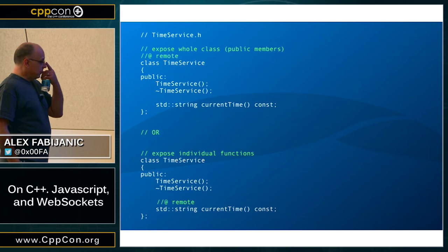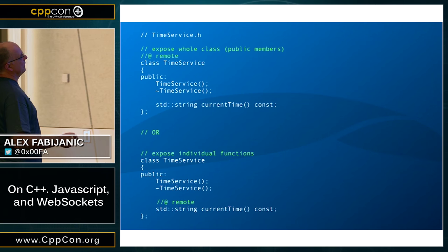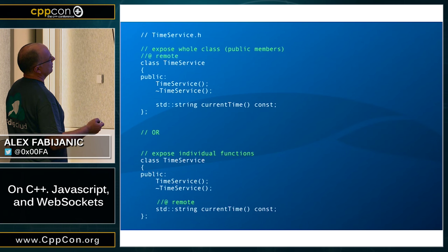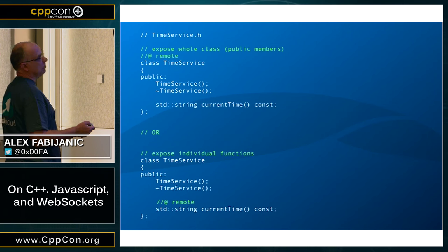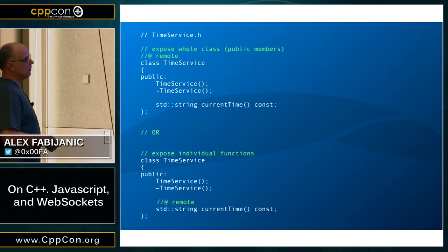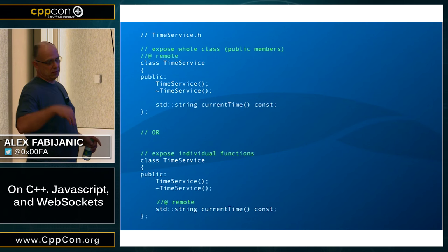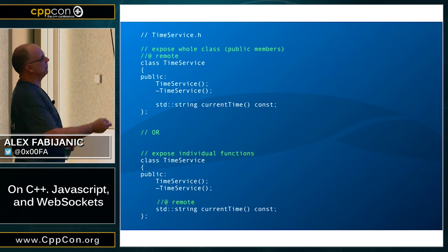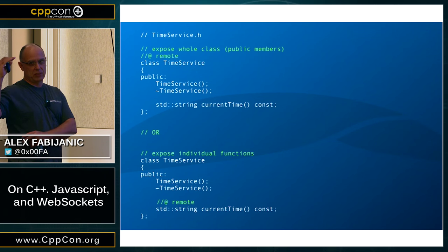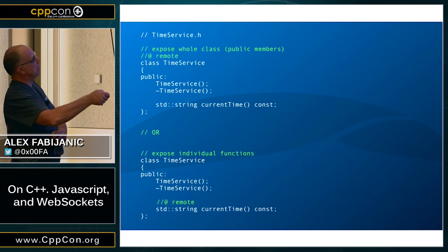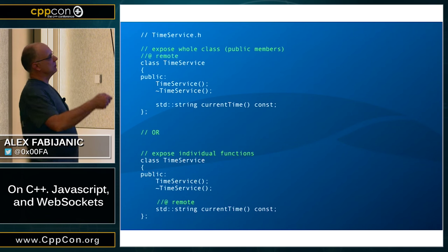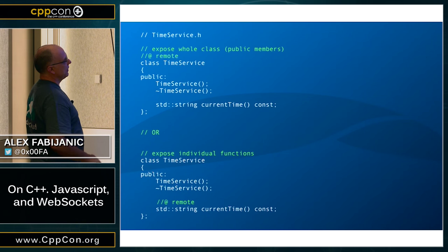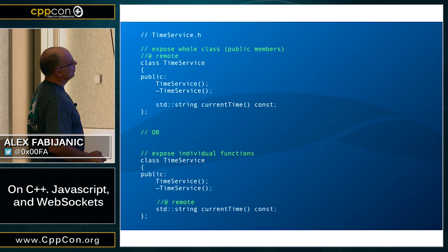Here's an example of what a remoting header looks like — a simple time service. If you want to expose your whole class, here's a little annotation: you put a comment with an at-sign and say 'remote'. This will export the public members of the class. The generator will take that and the remote gen XML, which is pretty much generic. I created the remote gen XML one time, and then if the header changes, you just rerun the generator and everything gets expanded into proper source files and headers. Or if you want to expose an individual function, you can annotate just one function and only that will be exported.